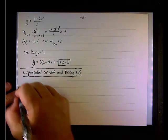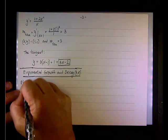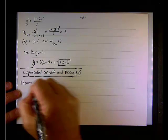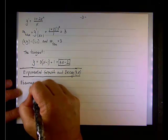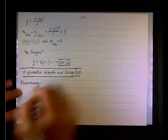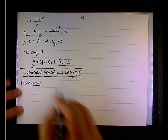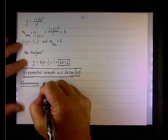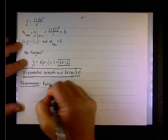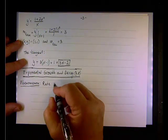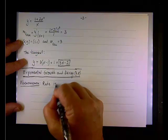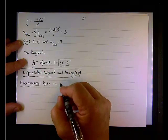The phenomenon is the following. What we say is that the rate in many phenomena in nature, the rate is proportional to the size of the population.